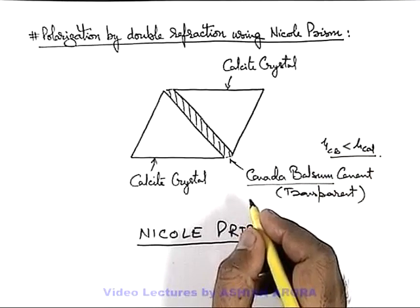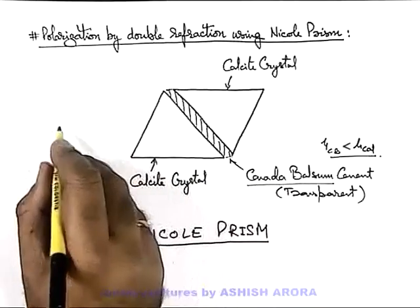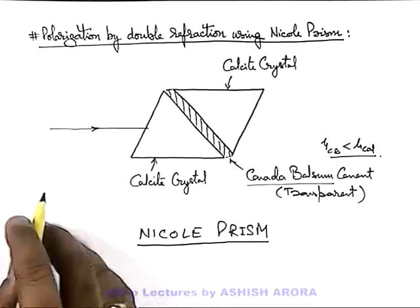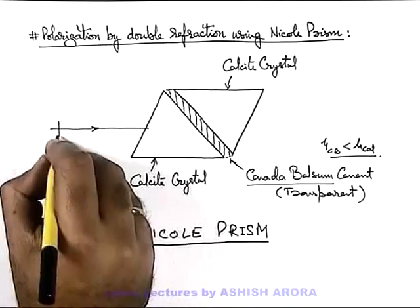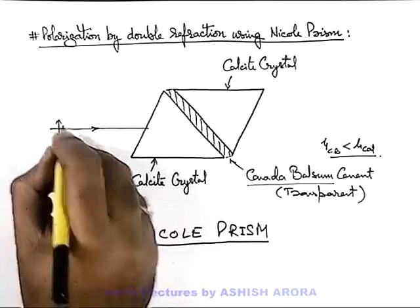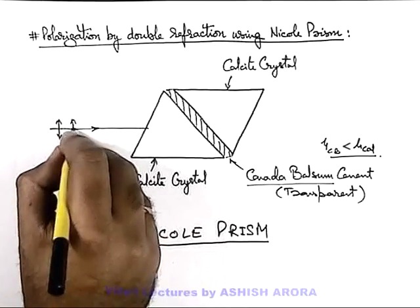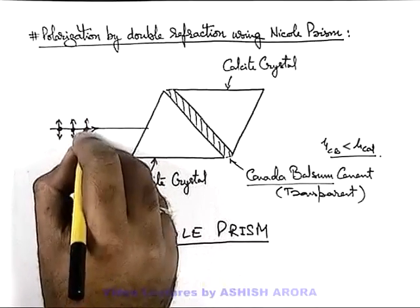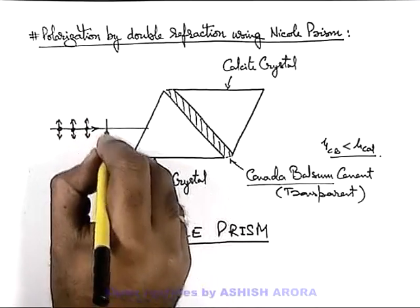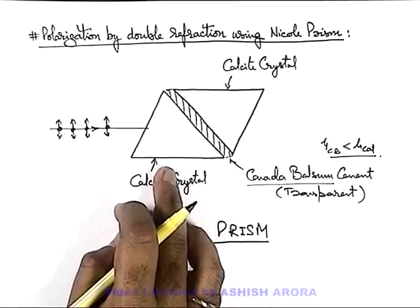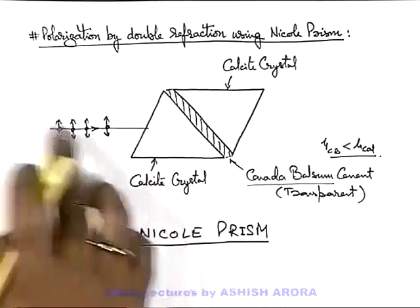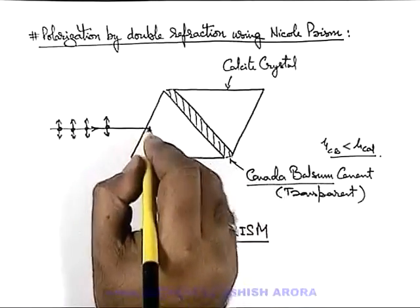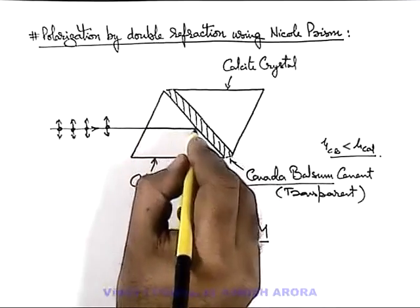In this situation, when ordinary light is incident onto this Nicol prism — which has all vibrations in the plane of incidence as well as perpendicular to the plane of incidence — it is the characteristic of the calcite crystal to split the ordinary light incident onto it into two rays.